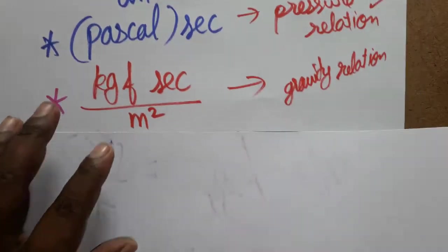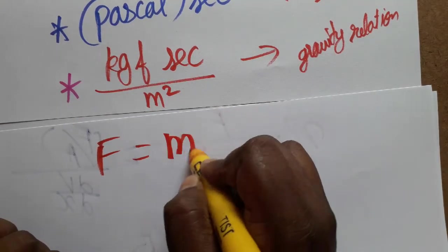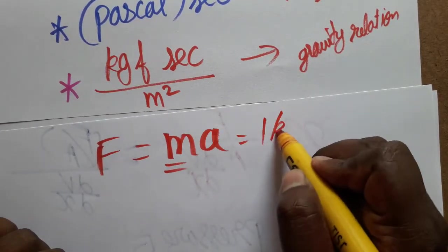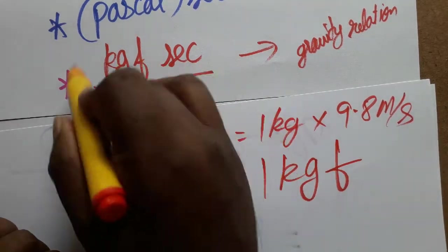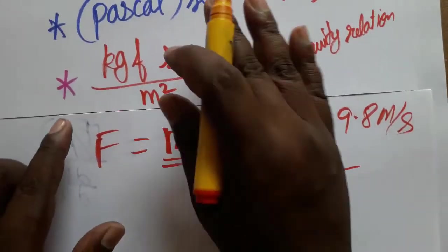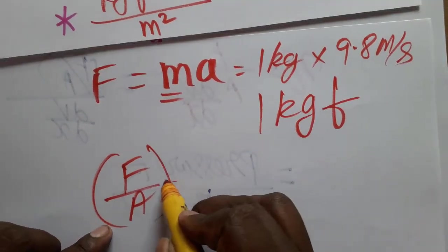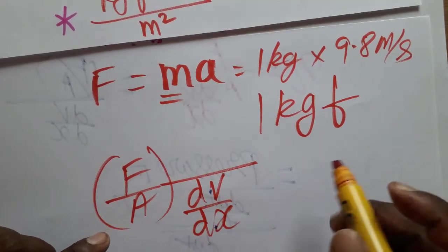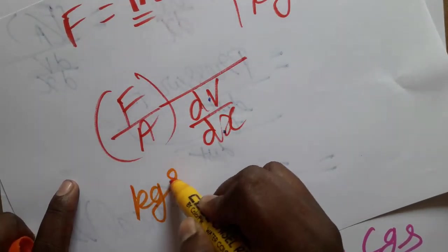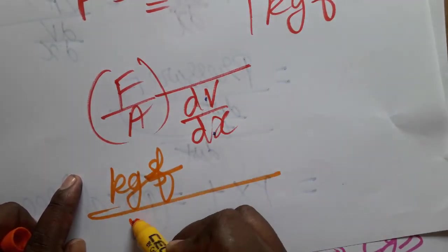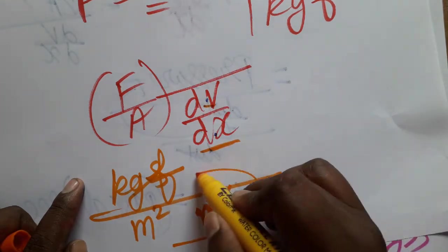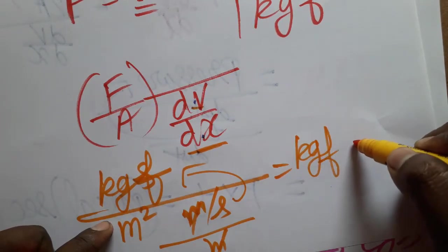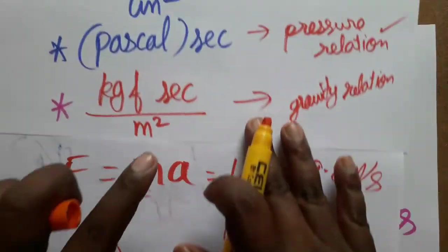The fourth unit is kgf·second per meter square. Here, force is expressed in kilogram-force (kgf), where we consider a mass of 1 kg under gravity of 9.8 m/s². Using the formula η = F / (A × dv/dx), the force unit is kgf, area is meter square, and velocity is meter per second divided by meter — so meters cancel, and second goes to the numerator. This gives us kgf·second per meter square.